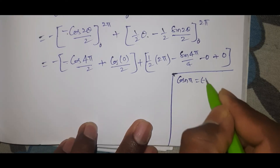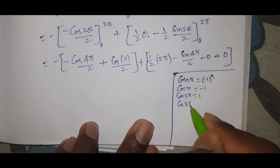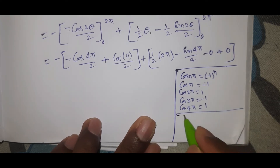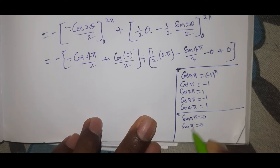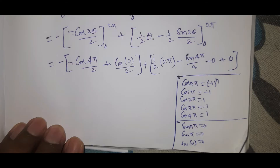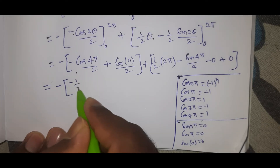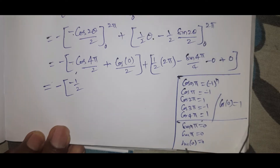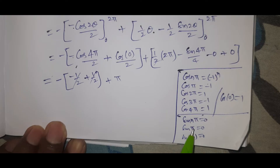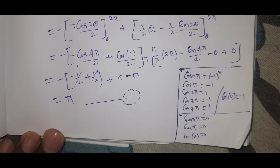Using the values: cos(nπ) = ±1 for integer n (cos2π = 1, cos0 = 1), and sin4π = 0, sin0 = 0, the terms simplify. The 1/2 terms cancel and we get π. So LHS = π. This is equation number 1.